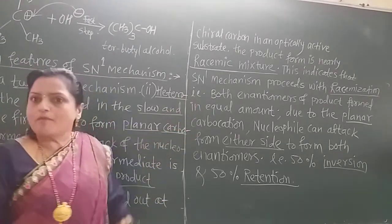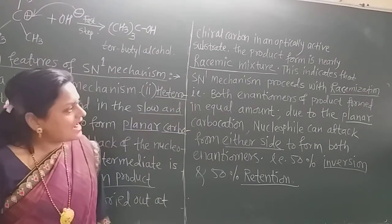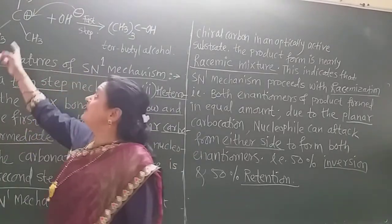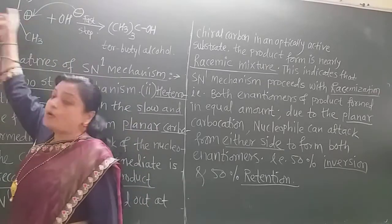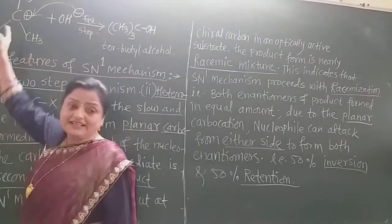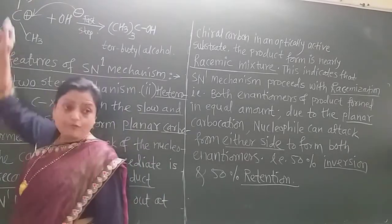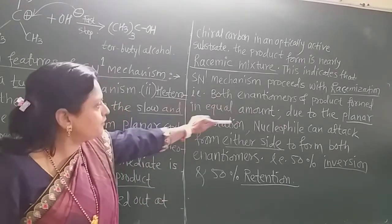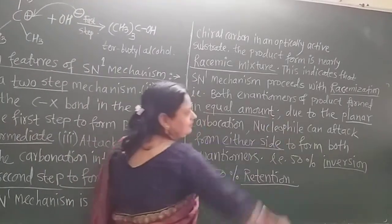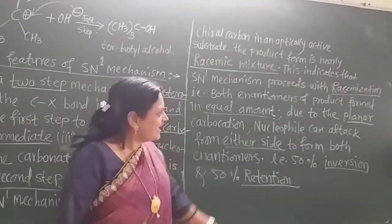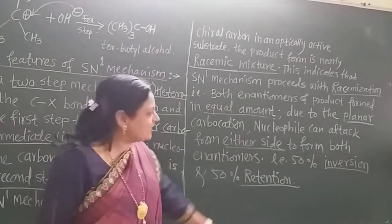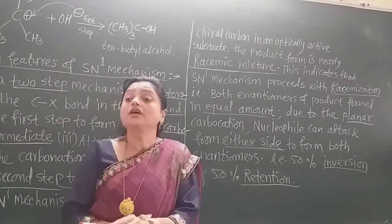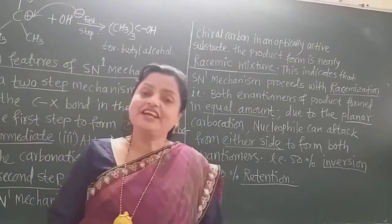Both enantiomeric products are formed in equal amounts. Due to the planar carbocation, the OH minus ion can attack from both sides. Attack from the same side gives retention of configuration; attack from the opposite side gives inversion. So both enantiomers form in equal amounts — 50% inversion and 50% retention — because the nucleophile can attack from either side of the planar carbocation. We will see that structure in the next video.